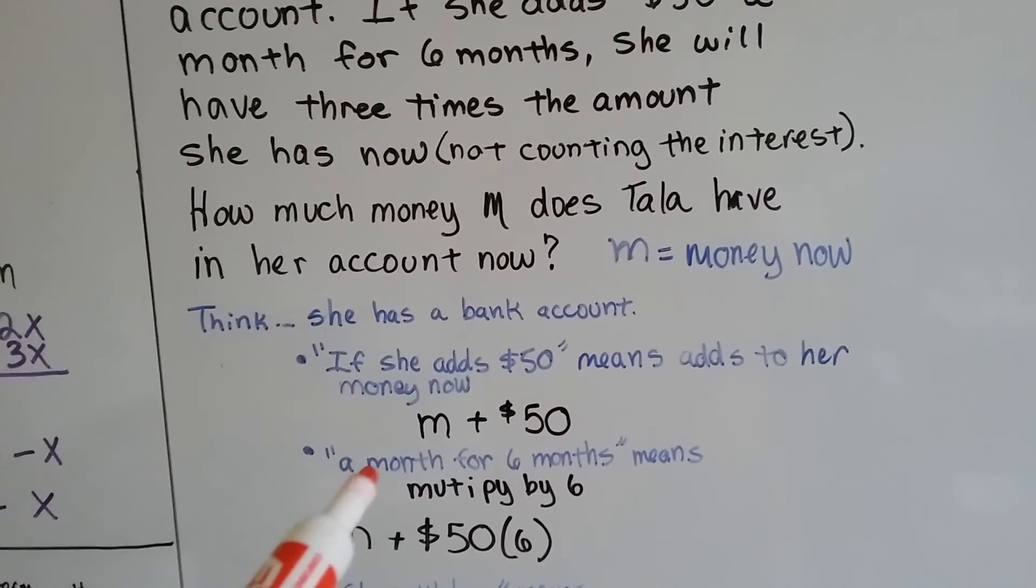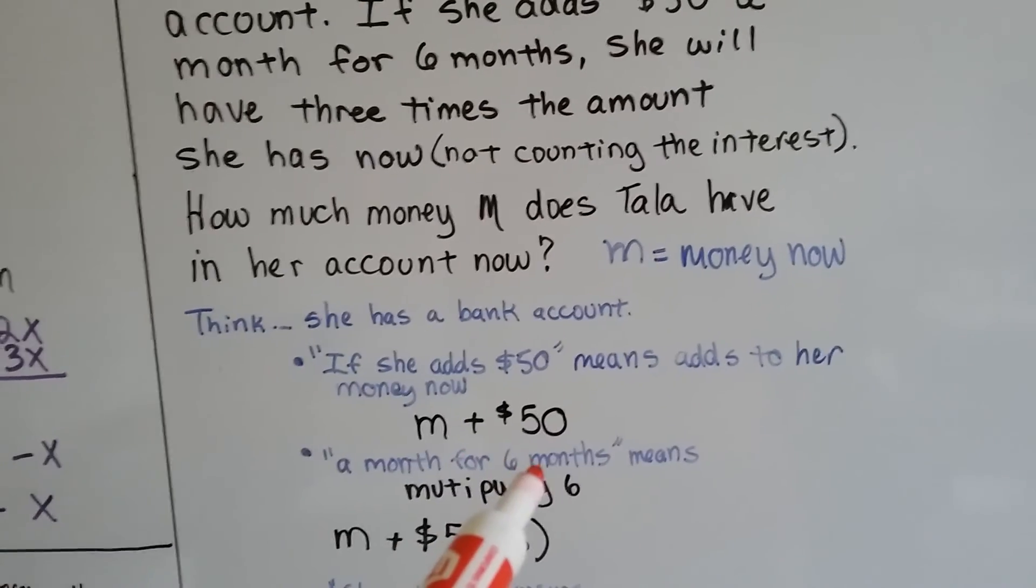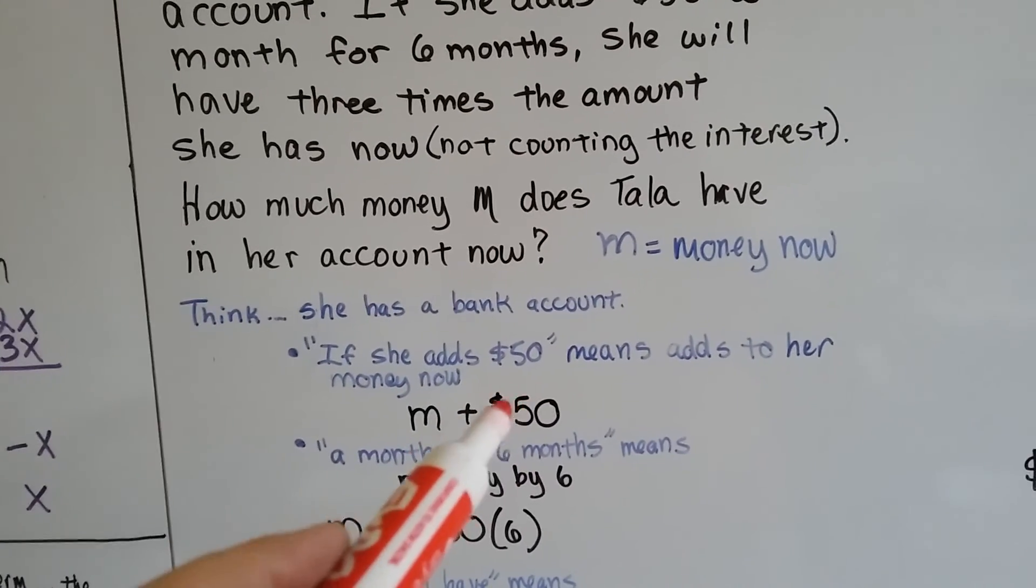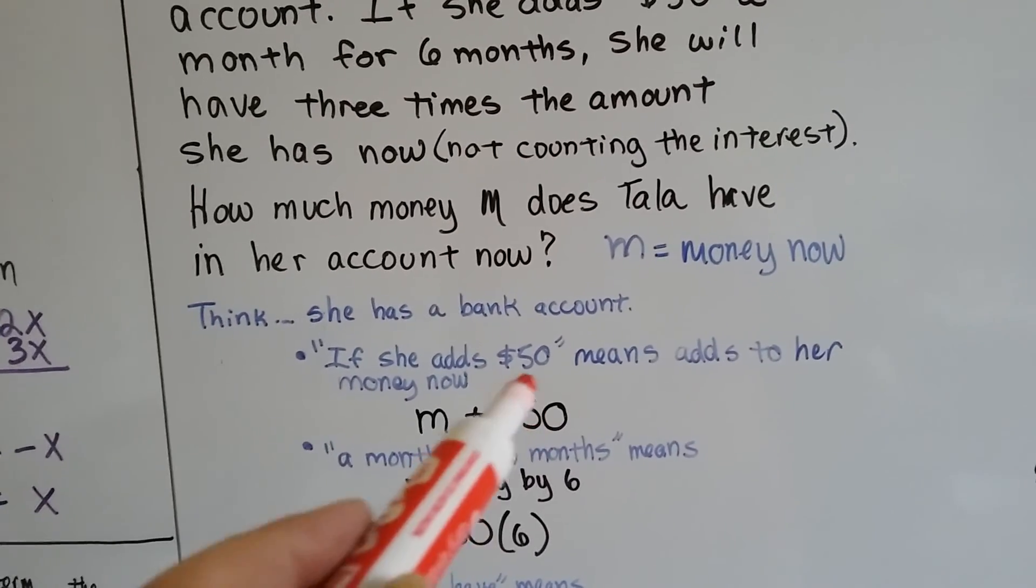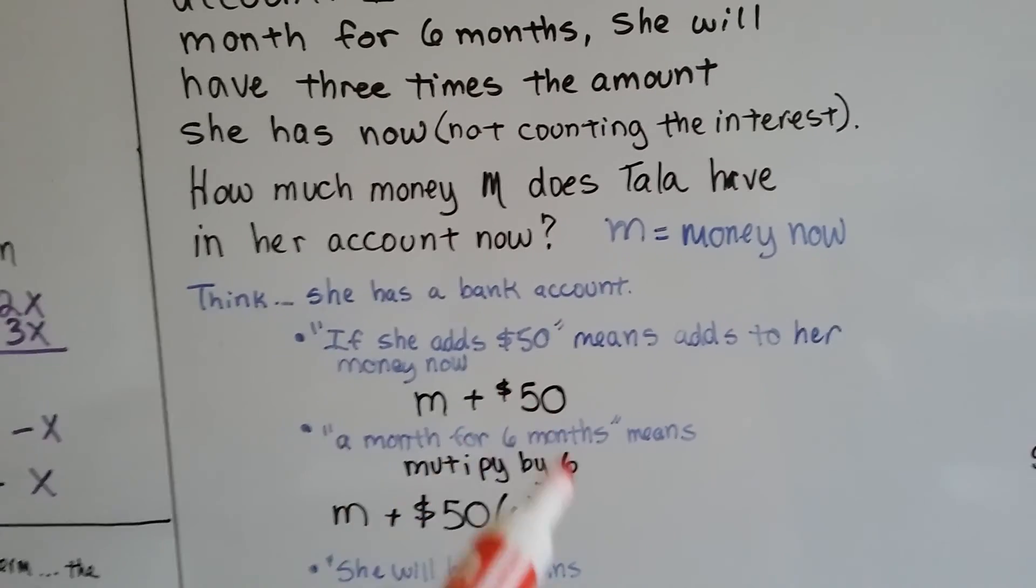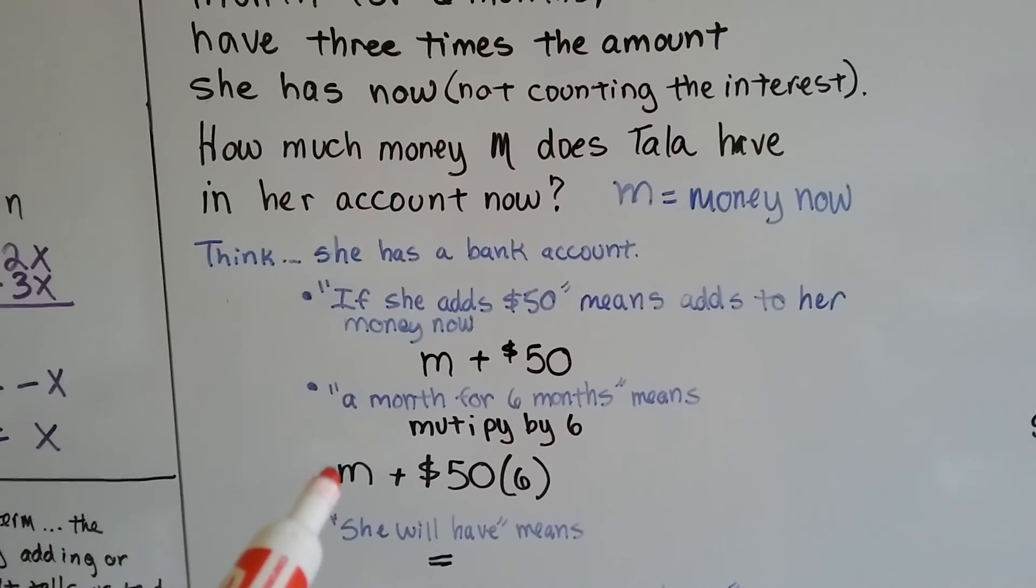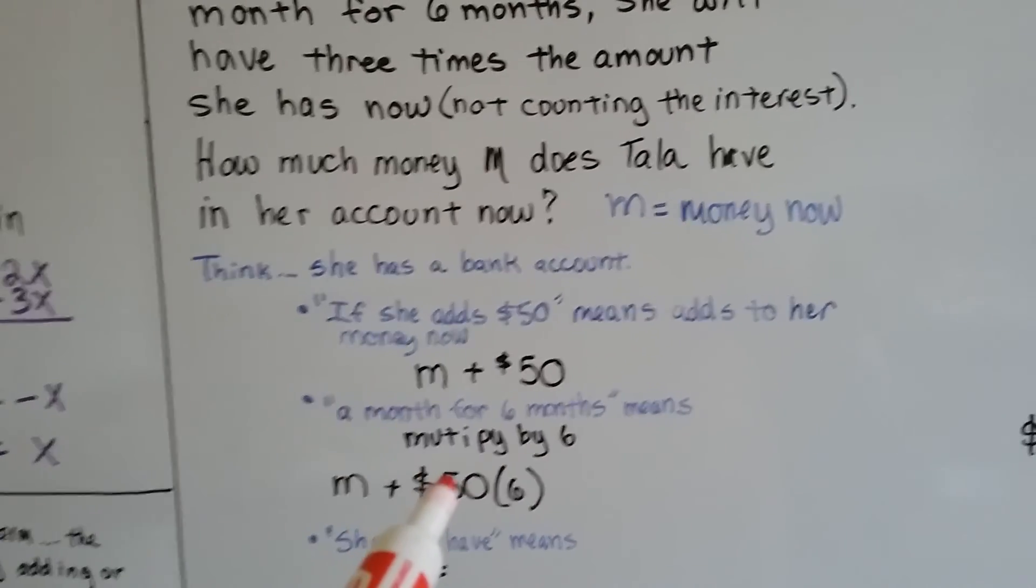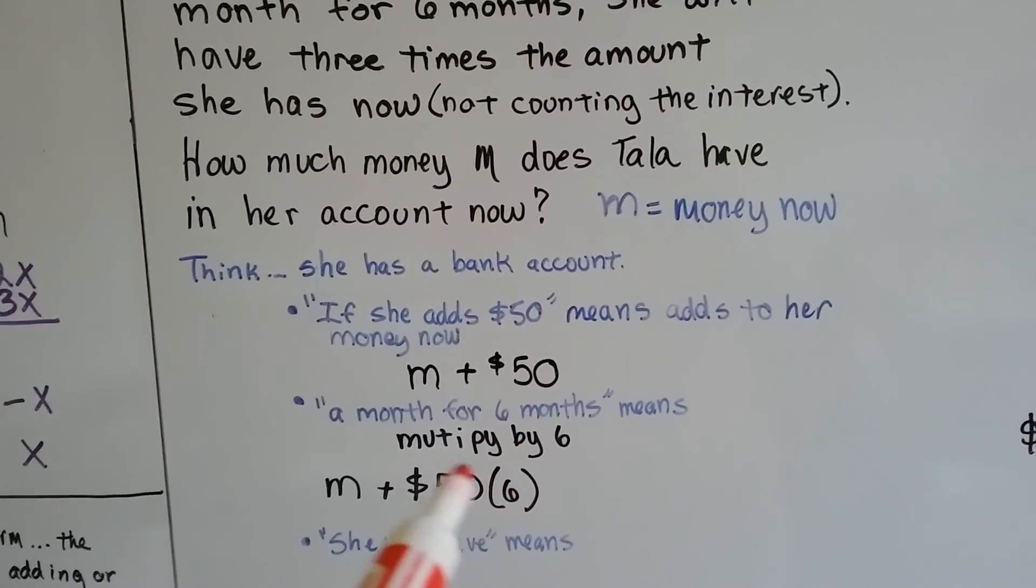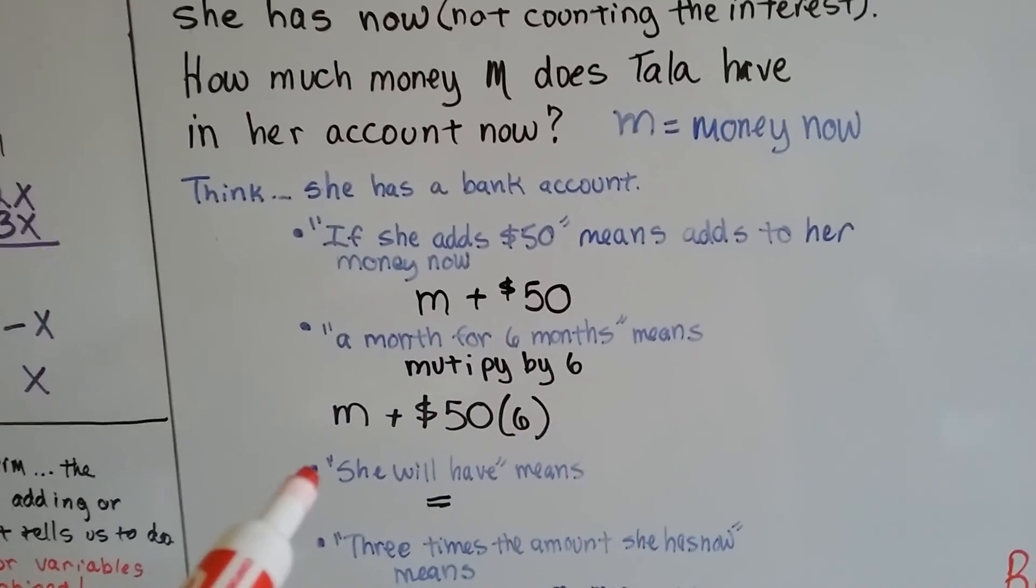It says, she's going to add each month for 6 months. So that means there's going to be $50 each time for 6 months. That means we need to multiply the $50 by 6. So now we have the original money plus $50 for 6 months, every month.